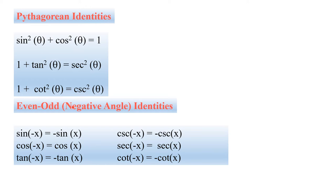These are the negative angle identities. Sin of minus x is equal to minus sin x. Cos of minus x is equal to cos x. Tan of minus x is equal to minus tan x. Csc of minus x is equal to minus csc x. Sec of minus x is equal to sec x. Cot of minus x is equal to minus cot x.